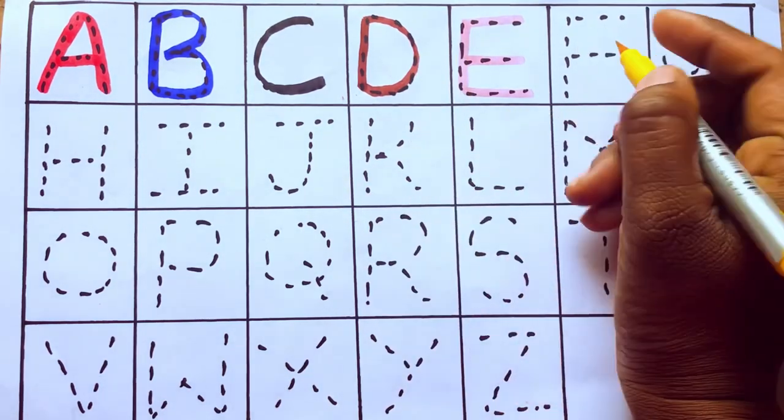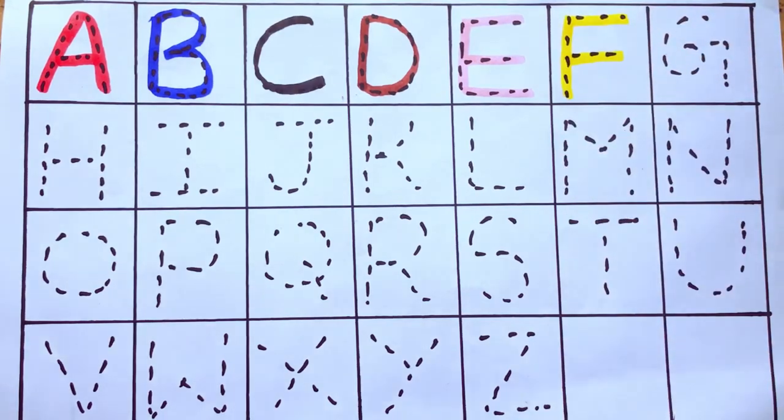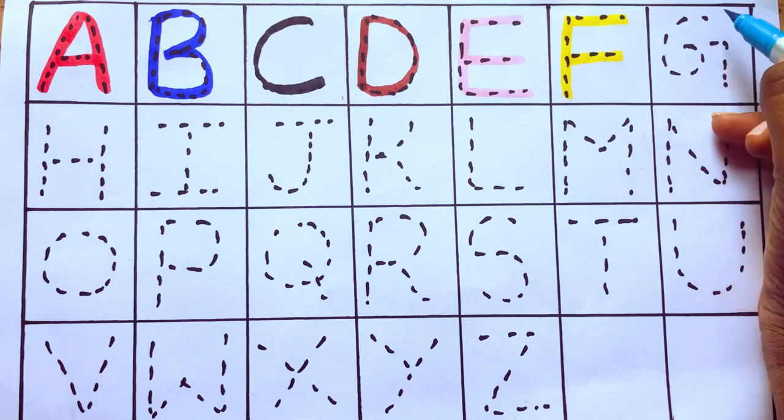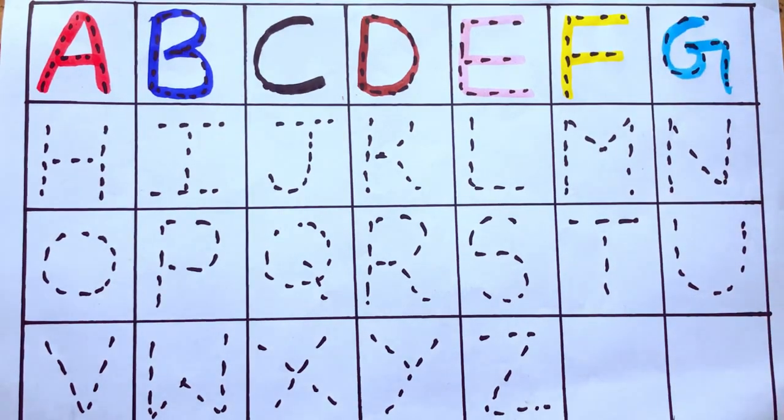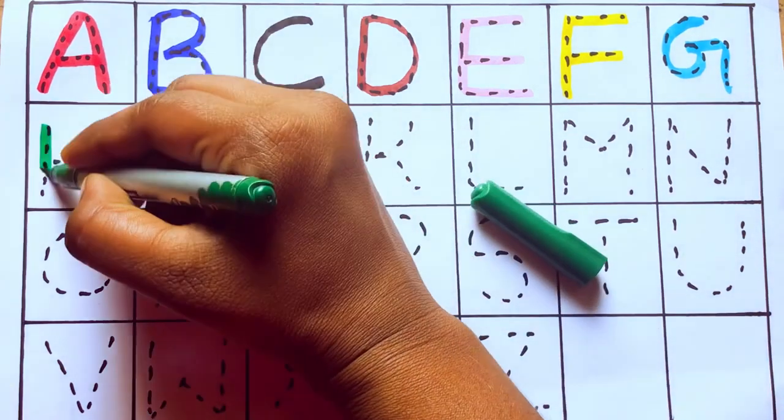Yellow color, F for fish. Sky blue color, G for goat. Green color, H for head.